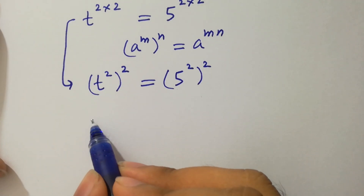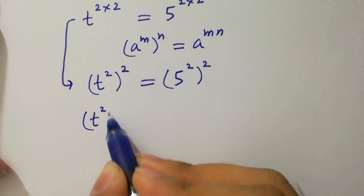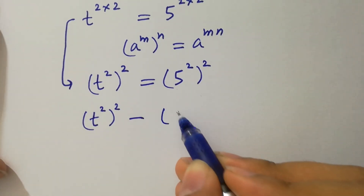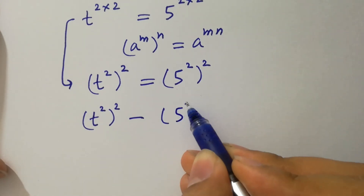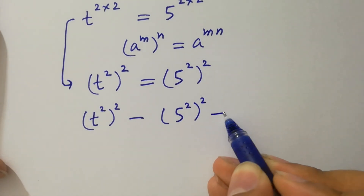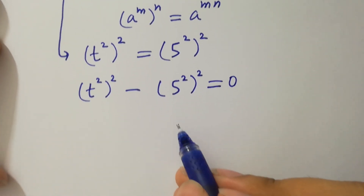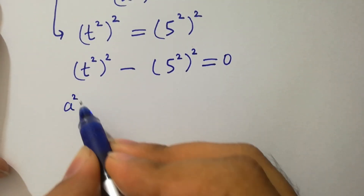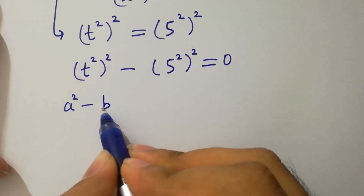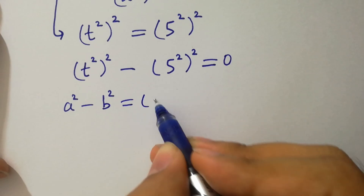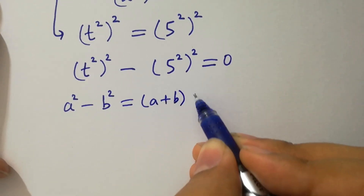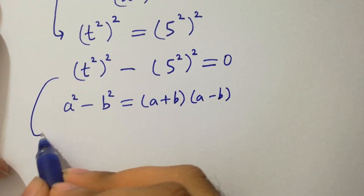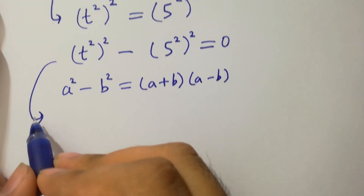This can be written as (t squared) squared minus (5 squared) squared equal to 0. By the formula a squared minus b squared equals (a plus b)(a minus b), we apply it.